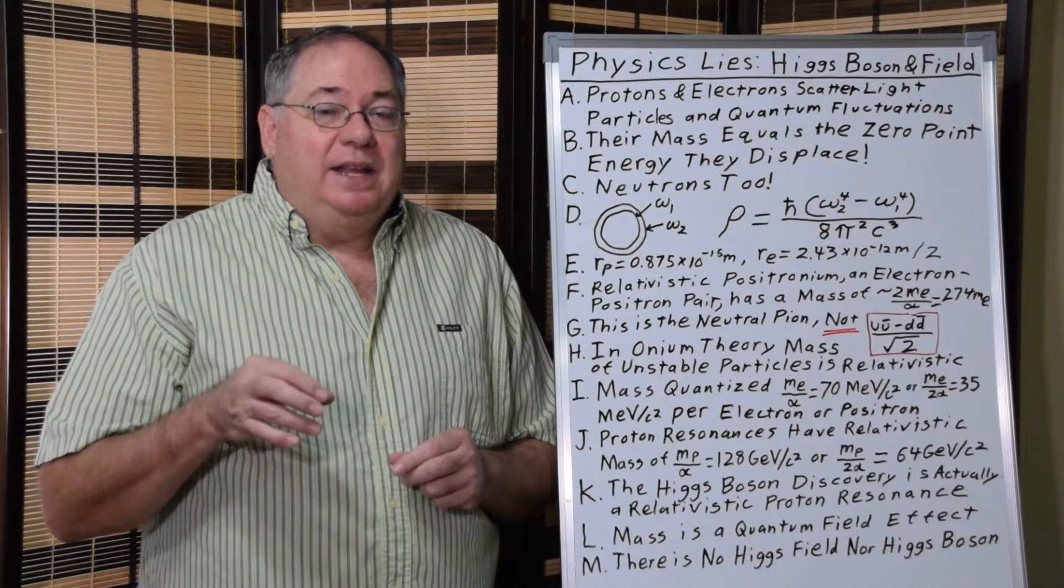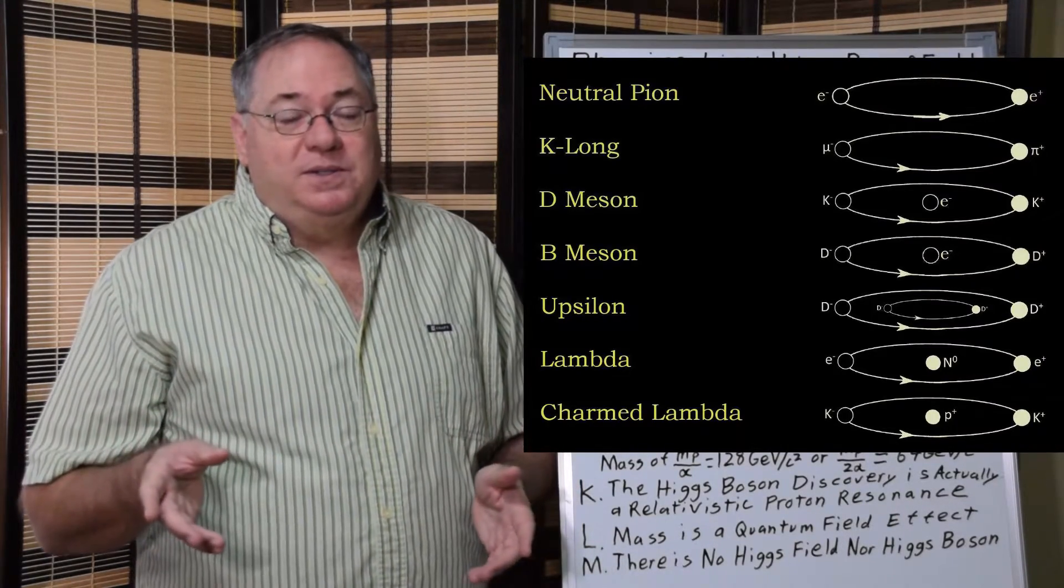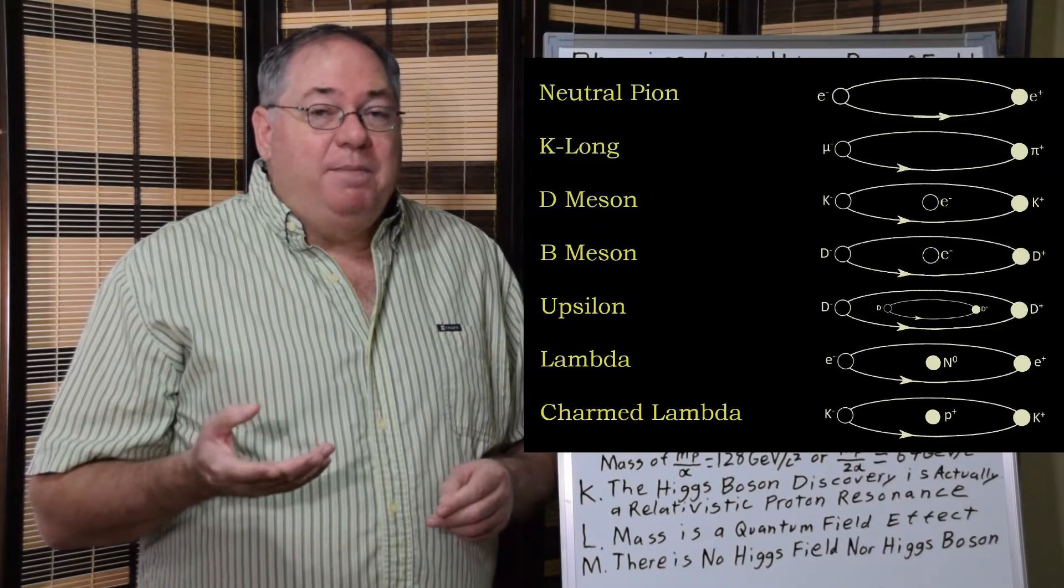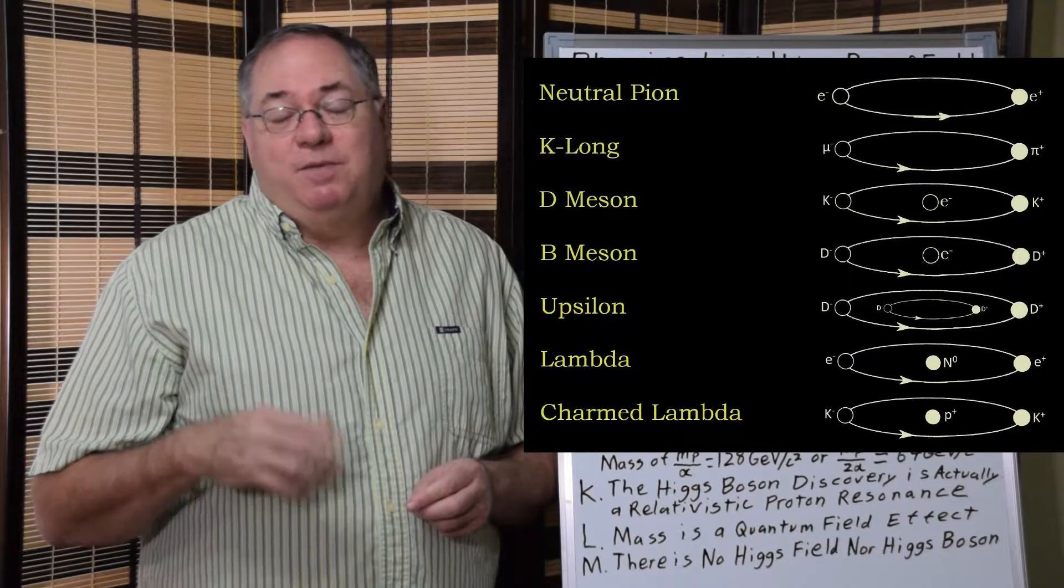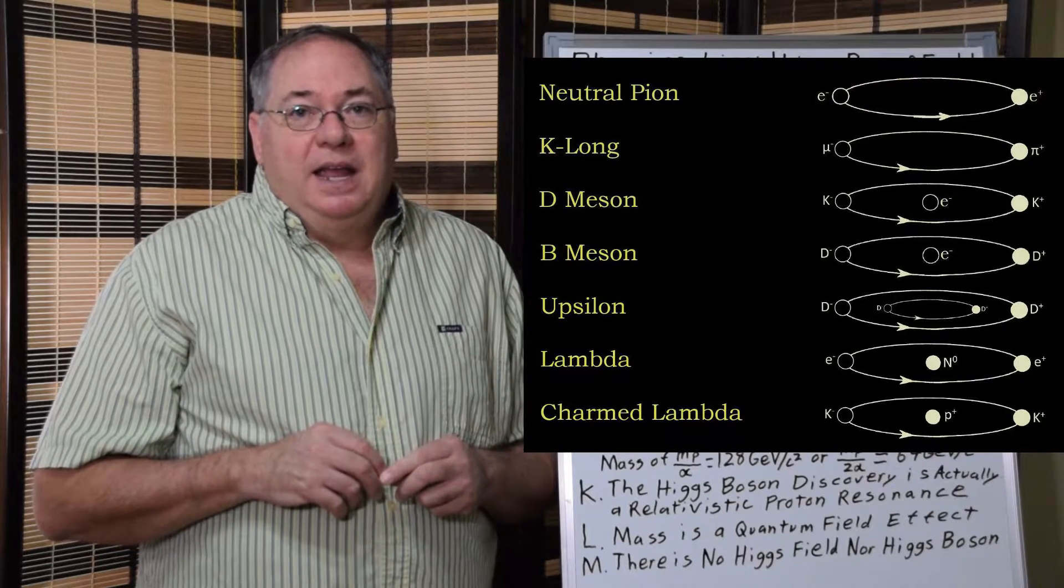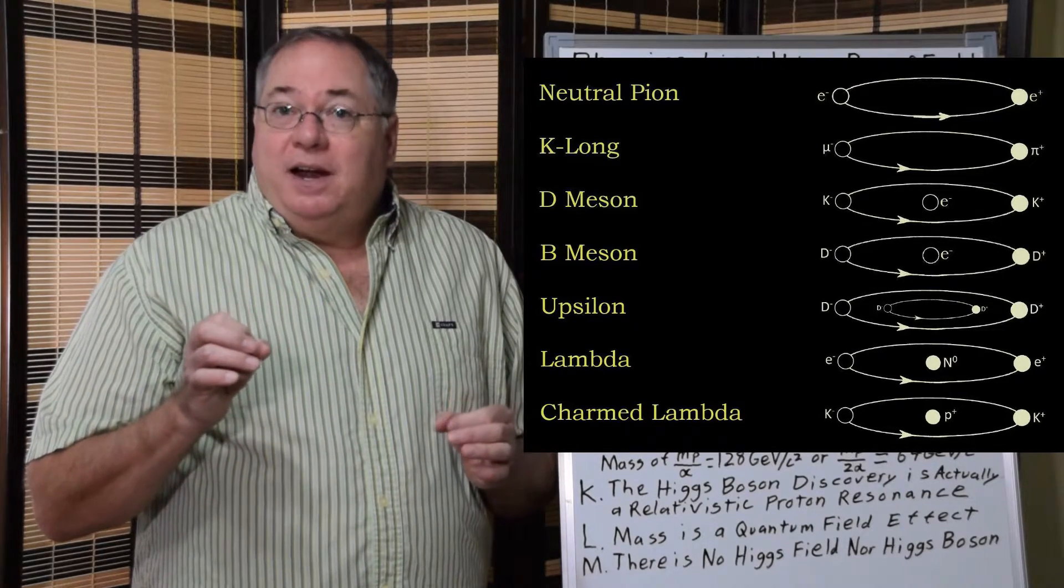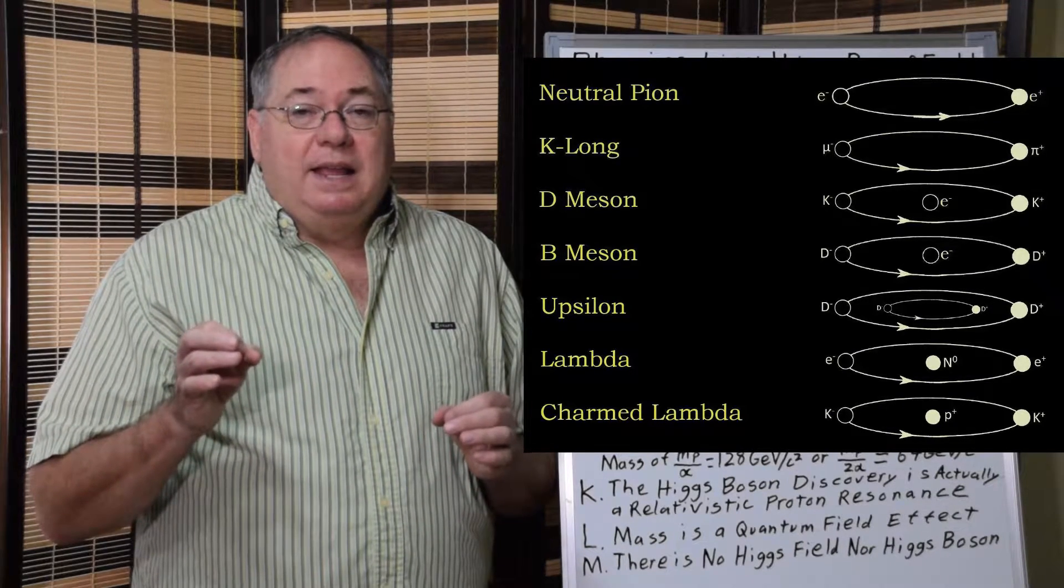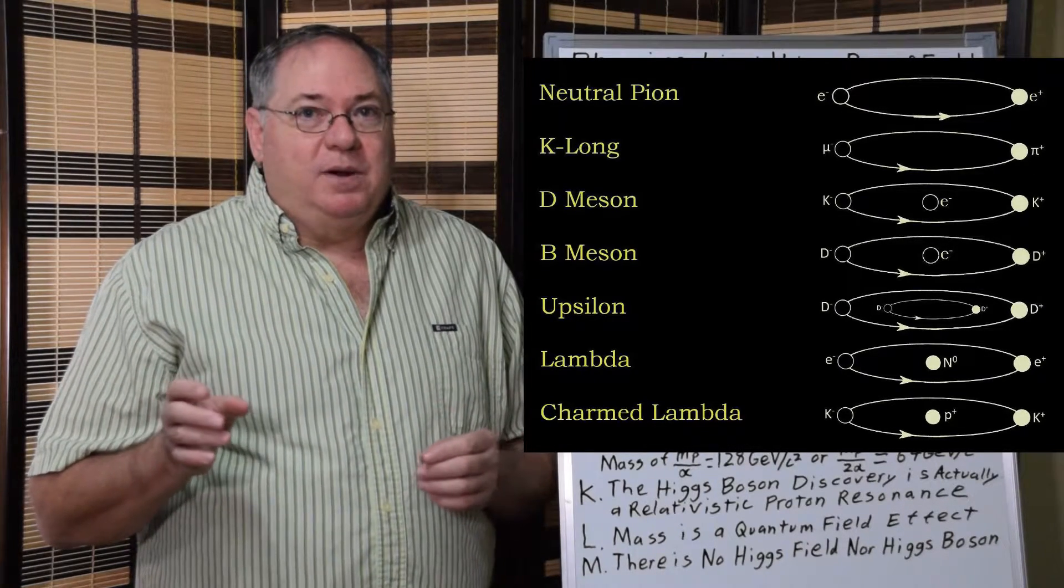And it turns out that you can make a model like that for all the unstable particles. And I did, and I call it the Onian theory. And I can account for all the decay products of the particles. And I can account for their mass to a very high degree of accuracy for the most part. There's a few I still need to work out the details. But it turns out that an Onian model where you have particles made entirely of electrons, positrons, protons, or antiprotons and nothing else, you can account for all the unstable particles that way.